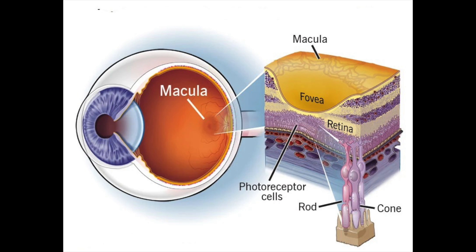That's what deals with your central vision. Underneath the receptor cells, there are a few different layers of tissue. One's called the RPE, or the retinal pigment epithelium. Another one's called Bruch's membrane. And then underneath that is a bed of blood vessels which provides the nutrients that flow to the receptor cells.